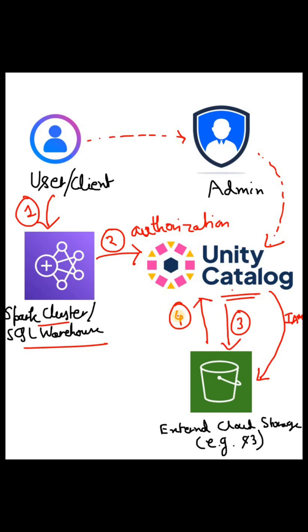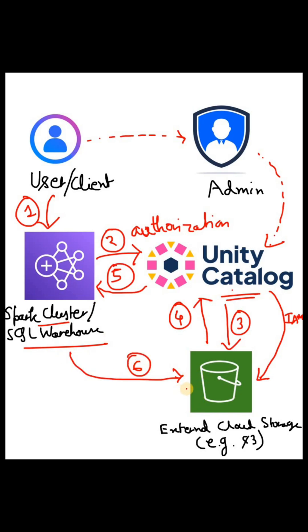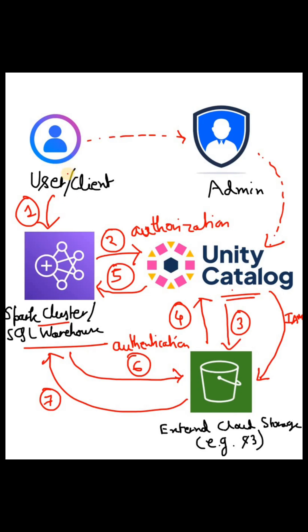That temporary credential is step four — Unity Catalog gives it back to the Spark cluster. Now the Spark cluster has the credential to query the data; it goes to cloud storage, provides the temporary credential, and once authentication is done, the cloud storage provides the Spark cluster with the required data.